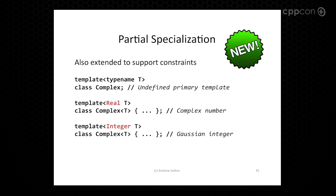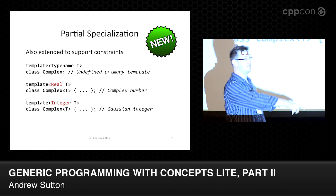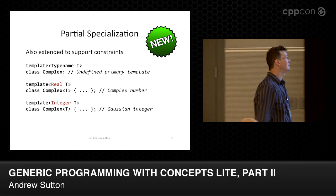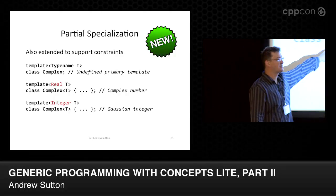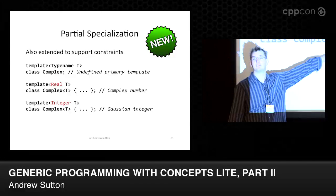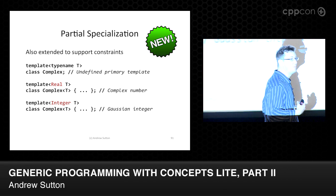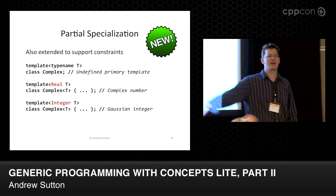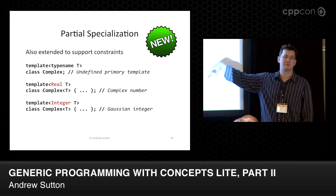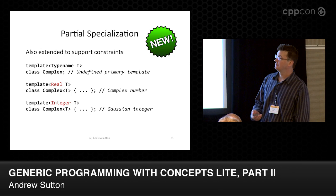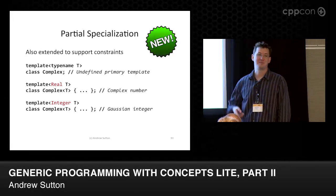A similar idea applies to template specialization. Here I have an unconstrained primary and two specializations. We have a real complex number with some concept 'real,' and an integer complex number — a Gaussian integer. For any specialization satisfying those constraints, the compiler chooses which one is most appropriate based on the satisfied constraints. It's actually easier in this case because real and integer are disjoint — there's no overlap. If there were overlap, you'd always get ambiguous cases.